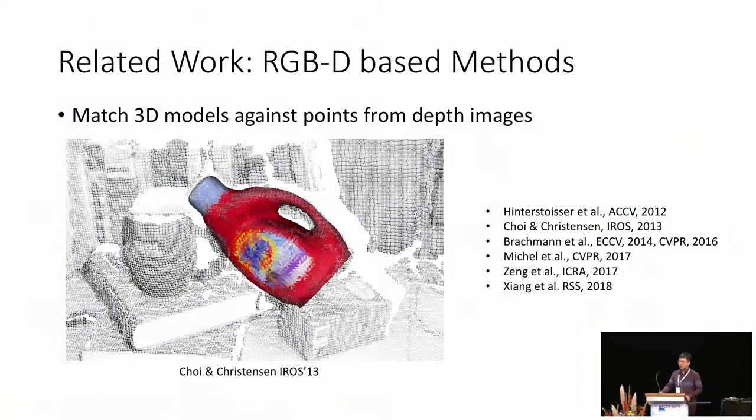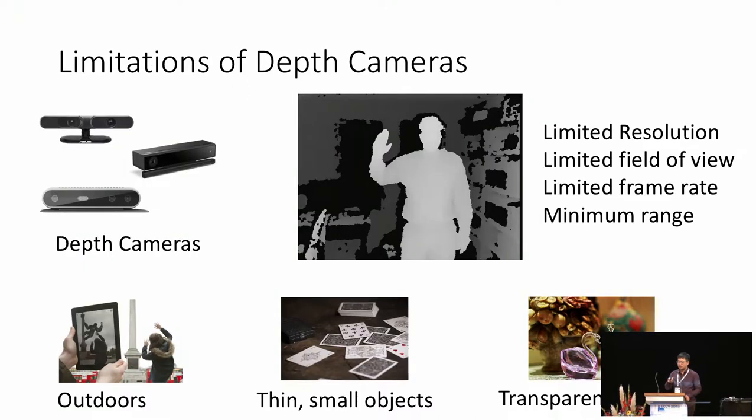There are many recent papers having excellent performance on this task by using not only RGB images but also depth images. However, compared to regular RGB cameras, depth cameras have limitations with respect to resolution, field of view, frame rate and limited depth range, making it very difficult to use in various settings. Additional limitations are outdoor scenarios, detecting small, thin, transparent or fast-moving objects.